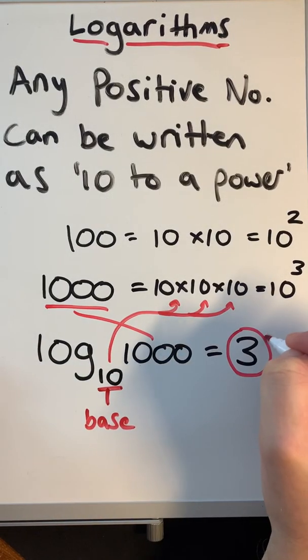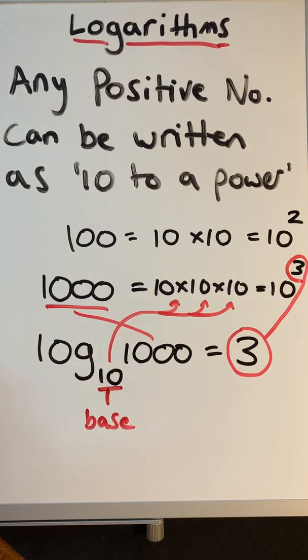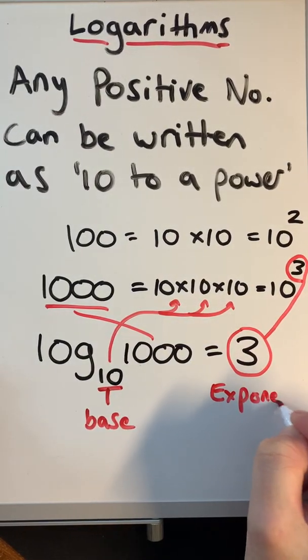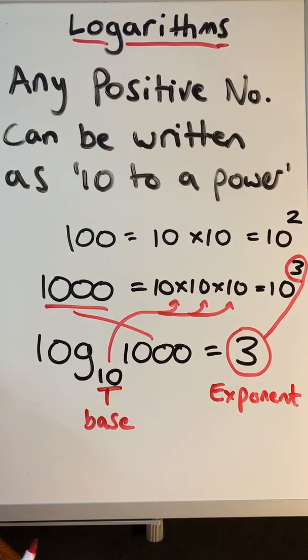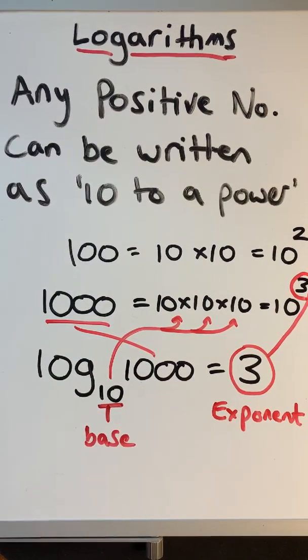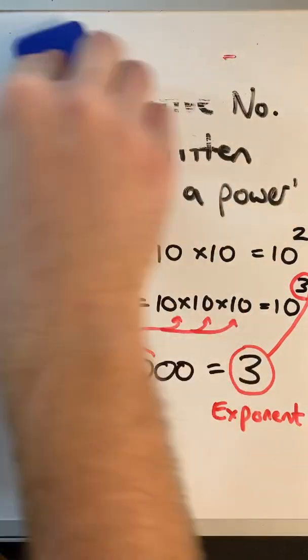The exponent is the number we need to raise the base to in order to get the result. So we have to raise the base to that power to get that number. In other words, how many times do we need to multiply 10 by itself to get a thousand? We need to multiply it by itself three times. Logarithms are almost like the inverse of exponentiation — the inverse of raising things to powers.